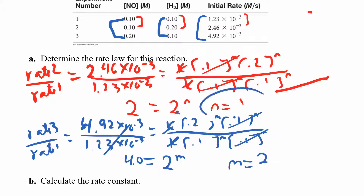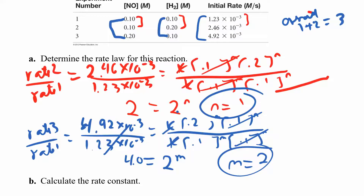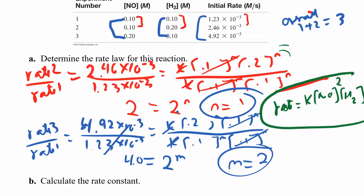You can see that M and N are not the same. If you want the overall order: 1 plus 2 gives me 3, so it's third order overall. The rate law is: rate equals K times [NO] to the second power times [H₂] to the first power. Make sure you don't confuse M and N - we just happened to solve for N first and then M. Make sure you put each reactant to the right exponent; it's easy to switch those around.